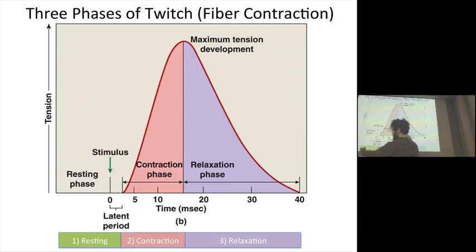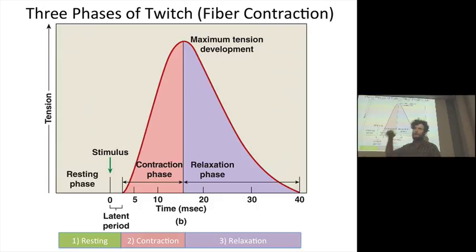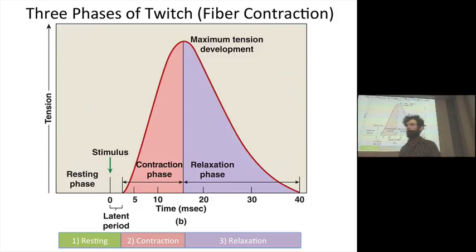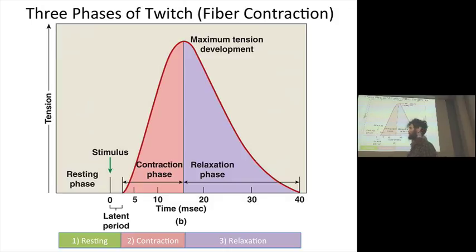A single twitch has three phases. There's a resting phase — it's not doing anything. Then we have a stimulus: this is when the action potential impinges upon the motor end plate. There's a little bit of a lag time — the latent period — while depolarization happens across the sarcolemma, travels down the T-tubules, causes depolarization, and release of calcium through the calcium channels of the sarcoplasmic reticulum. Calcium floods the sarcoplasm. It takes only a few milliseconds.